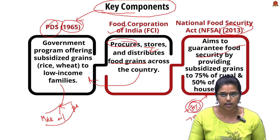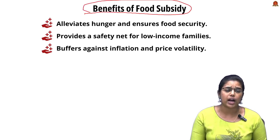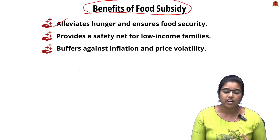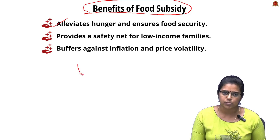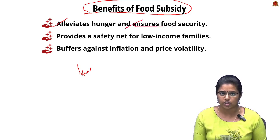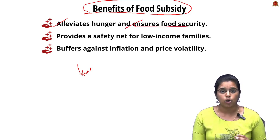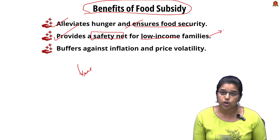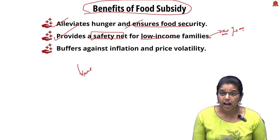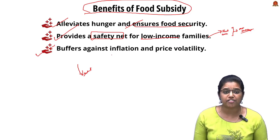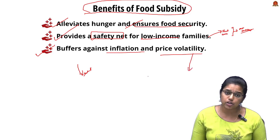The benefits of food subsidies include: alleviating hunger by making food affordable and accessible to vulnerable people, freeing up additional income for other essential activities. It ensures food security at a marginalized and subsidized rate, providing a safety net to low-income people so they can meet their nutritional and caloric requirements. Since foods are available at subsidized rates, they help people withstand inflation and price volatility even during market fluctuations.